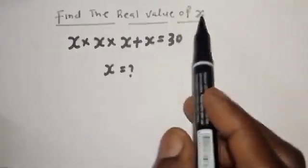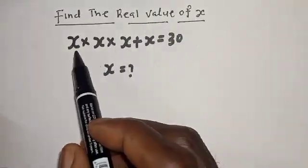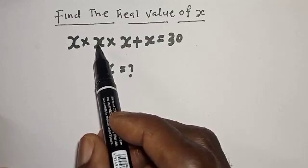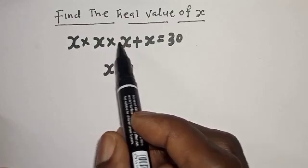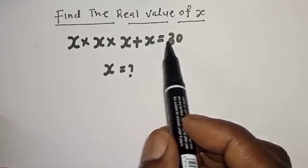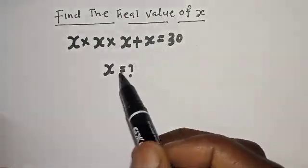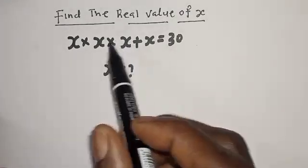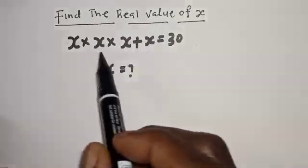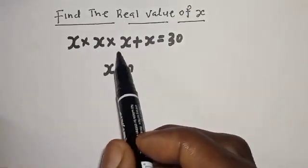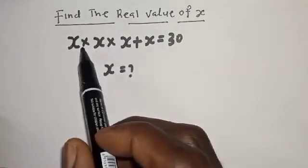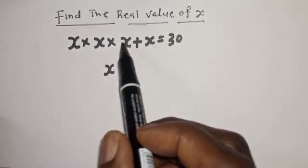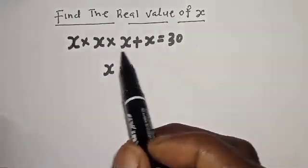Find the real value of s: s times s times s plus s is equal to 30. Hi everyone, welcome to my class. In this class we want to find the value of s from this equation: s multiplied by s multiplied by s plus s is equal to 30.